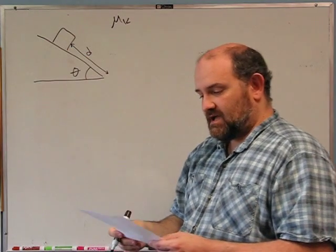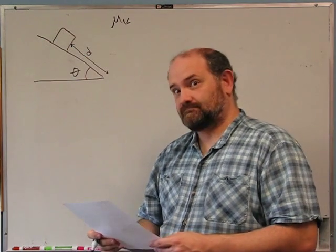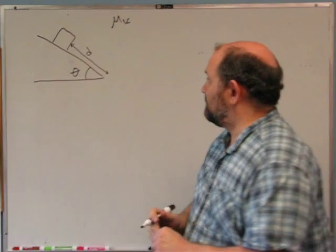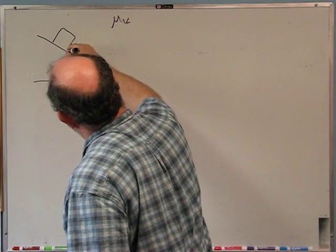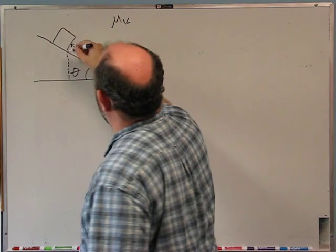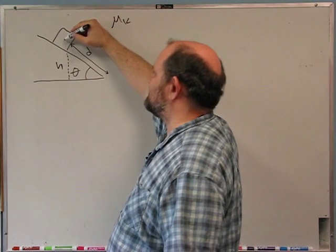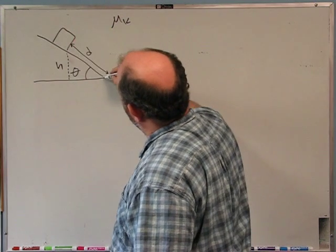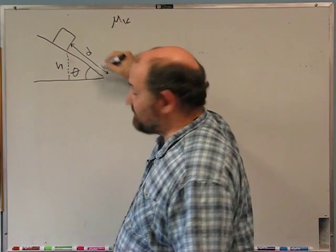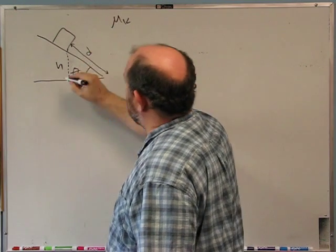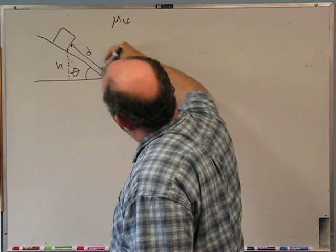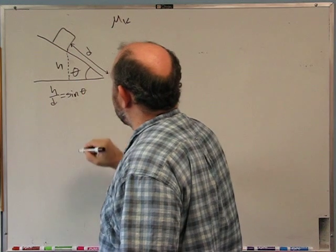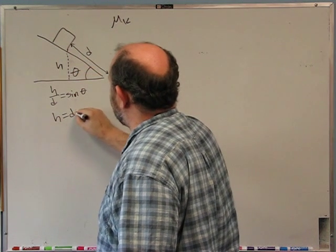How fast is the block going when it reaches the bottom? If there were no kinetic friction, we can figure out the initial height of the block. Using the front edge as reference point, h over d is sine theta, so h equals d sine theta.